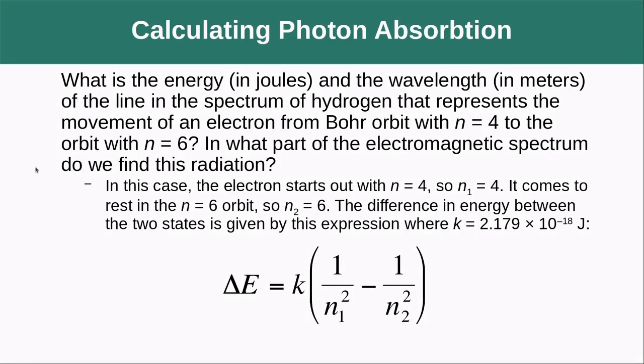Okay, so let's use the Bohr model to perform a calculation on the absorption of a photon. So what is the energy in joules and the wavelength in meters of the line in the spectrum of hydrogen that represents the movement of an electron from Bohr orbit with n equals 4 to the orbit with n equals 6. In what part of the electromagnetic spectrum do we find this radiation? Okay, so in this case the electron starts out with n equals 4. So n₁, this first guy here, is going to be a 4, and it comes to rest in n equals 6. So n₂ here is going to be 6.